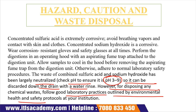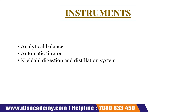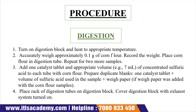Materials required: corn flour (not pre-dried), five digestion tubes, Erlenmeyer flasks (~250 ml), spatula, and weighing paper. Instruments required: analytical balance, automatic titrator, and Kjeldahl digestion and distillation system.